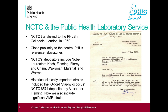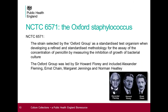Other notable depositors include Marshall and Warren, who in the 1980s identified that Helicobacter pylori was in fact a causative agent of peptic ulcers. Alexander Fleming sent a letter about the Oxford Staph — a strain selected by the Oxford group to test penicillin. They recognized the value of testing penicillin worldwide using the same strain, and deposited it as NCTC 6571. It's become known as the Oxford Staph and is actually one of the most commonly used organisms from NCTC even today.